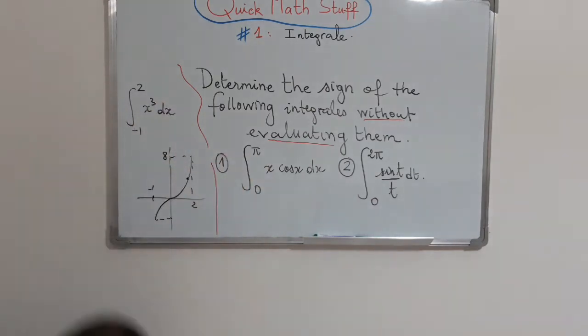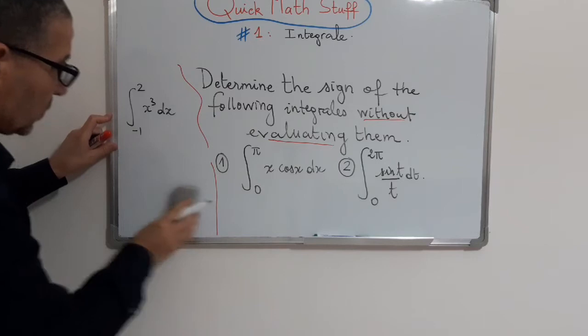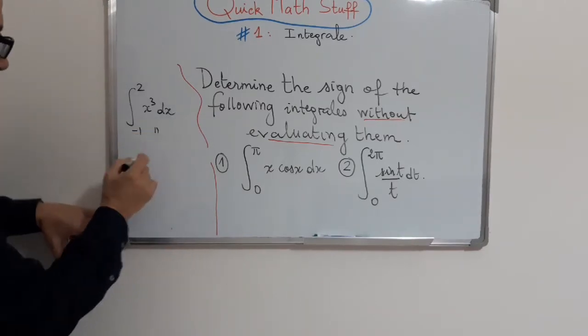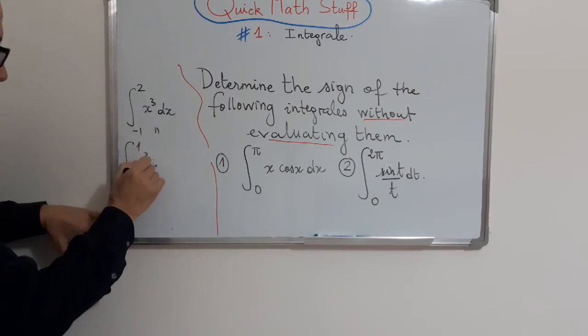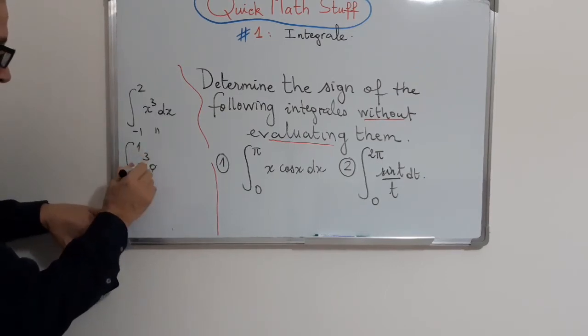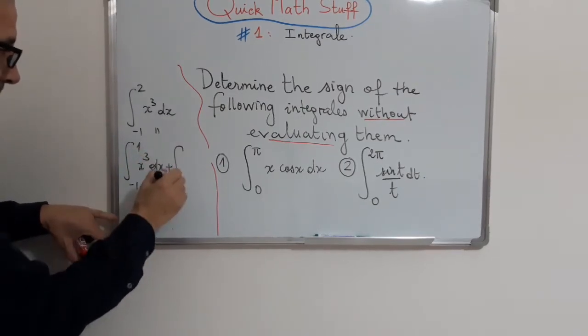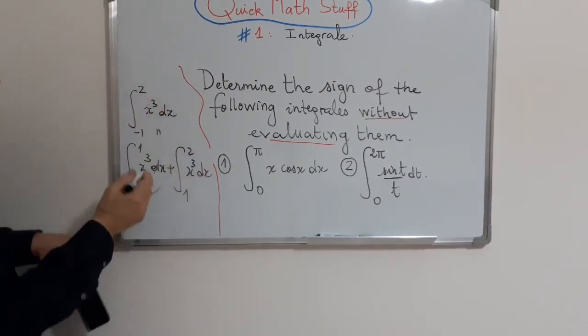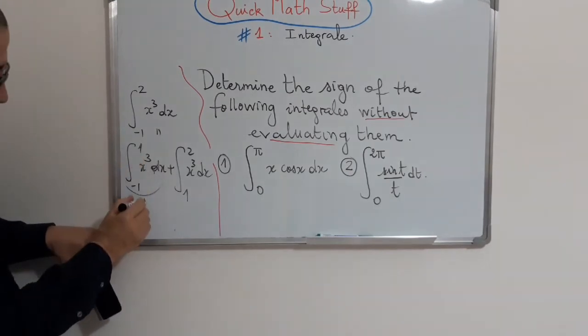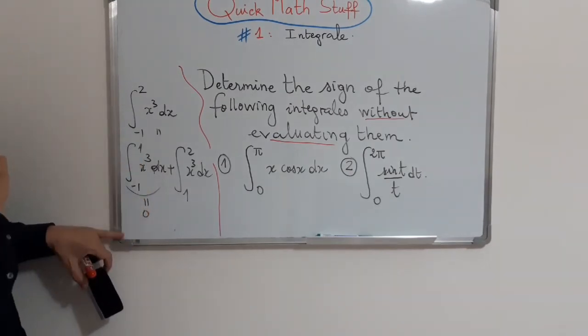So, here, the trick is simply to observe that the integral from minus 1 to 1 of x cubed dx. Because the function is odd, this integral is 0.